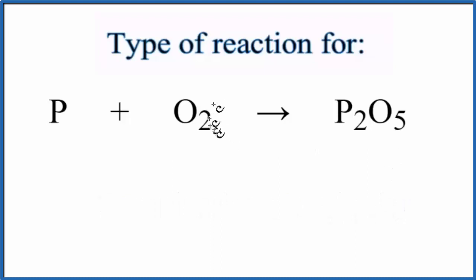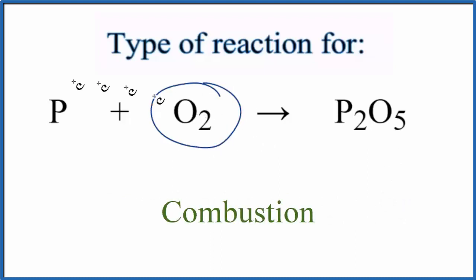We can also call it a combustion reaction. So we have this O2 here, this oxygen gas that's combining with the phosphorus. When we have oxygen gas and the reaction gives off heat, it's exothermic, we can call it a combustion reaction as well.